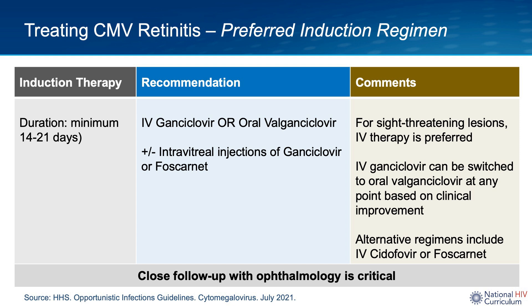The ophthalmologist may classify lesions as either sight-threatening versus non-sight-threatening. When the lesions are sight-threatening, the ophthalmologist will usually recommend starting with IV ganciclovir up front for induction, and may also recommend weekly intravitreal injections. The intravitreal drugs used are either foscarnet or ganciclovir, and intravitreal therapy is used to provide immediate high intraocular levels of the drug and presumably faster control of the retinitis. These injections are typically continued on a weekly basis until lesion inactivity is achieved.